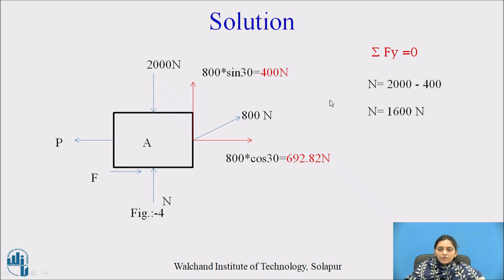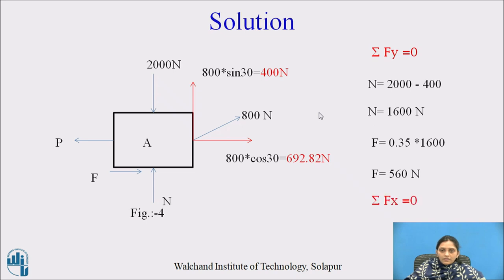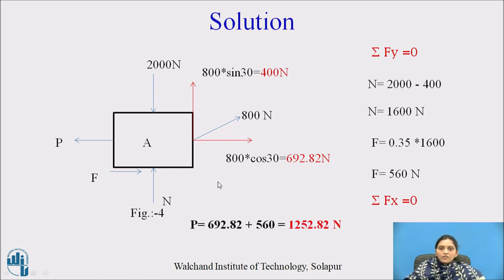Using the definition of the coefficient of friction: F = mu × N = 0.35 × 1600 = 560 N. Now applying equilibrium in the X direction (ΣFx = 0), with P as the only remaining unknown: P = 692.82 + 560 = 1252.82 N. This is the value of P when motion is impending towards the left.